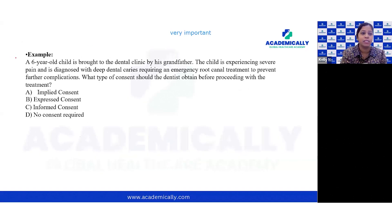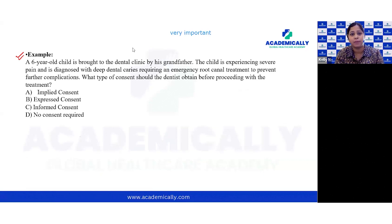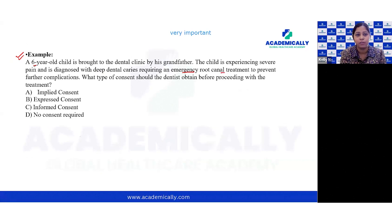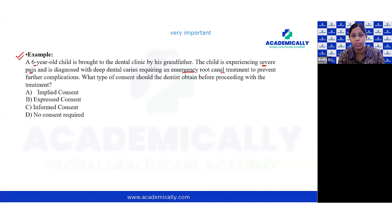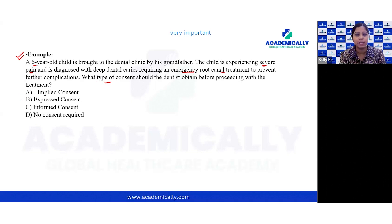Let's take an example: a six-year-old child is brought to the dental clinic by his grandfather and is experiencing severe pain, diagnosed with deep dental caries requiring an emergency root canal treatment. In this case, the six-year-old child is not competent and cannot give consent. The treatment is urgent but not life-threatening. What type of consent should the dentist obtain — implied consent, expressed consent, informed consent, or no consent?